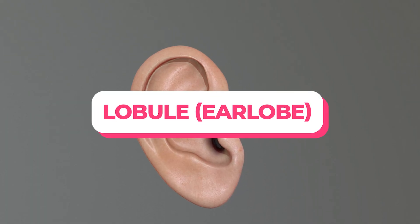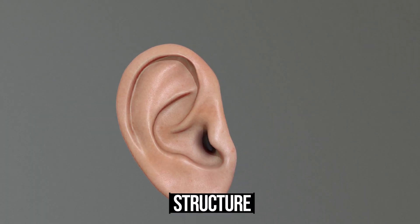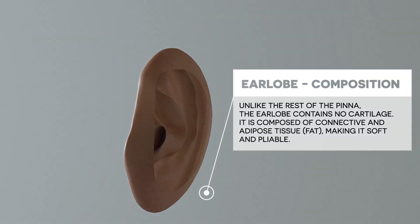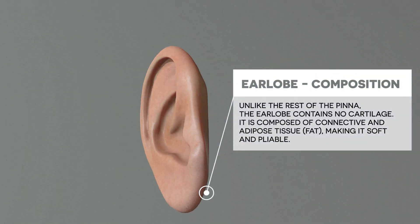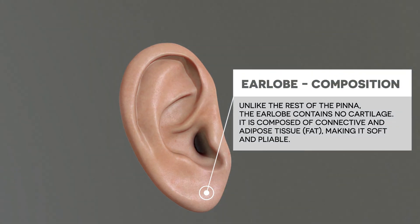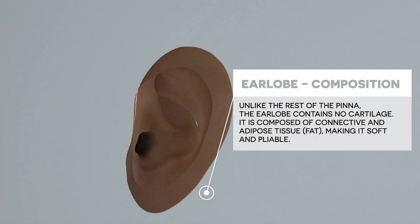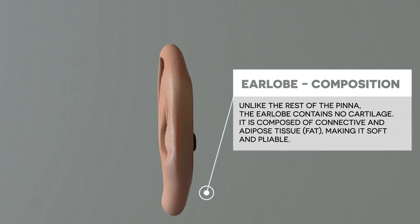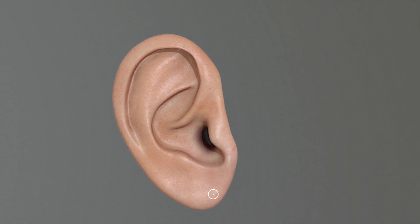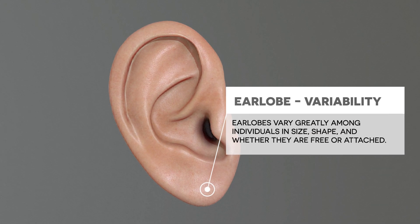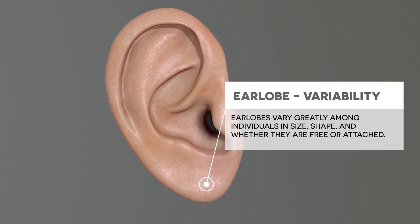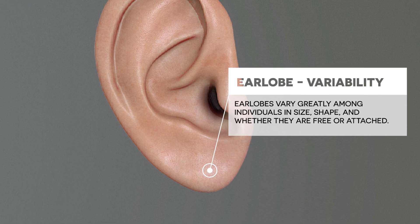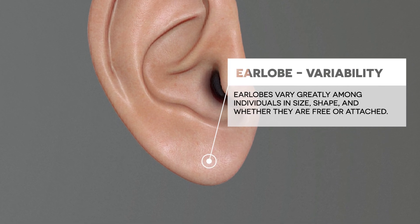The lobule, or earlobe, has a distinct structure. Unlike the rest of the pinna, the earlobe contains no cartilage. It is composed of connective and adipose tissue, making it soft and pliable. Earlobes vary greatly among individuals in size, shape, and whether they are free or attached.